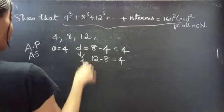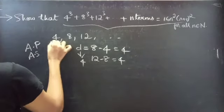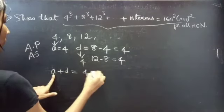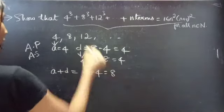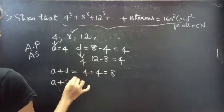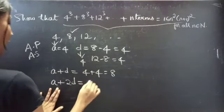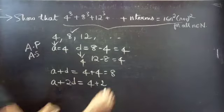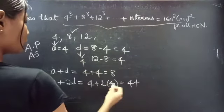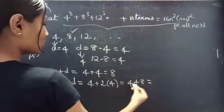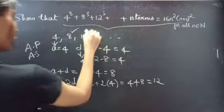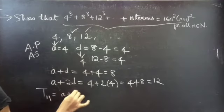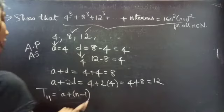D is 4. If a is 4, then a plus d must be the second term — 4 plus 4 equals 8, so this is our second term. Likewise, a plus 2d will be our third term: 4 plus 2 times 4 equals 4 plus 8 equals 12, which is our third term. Likewise, we can find the nth term using the formula a plus (n minus 1) times d.